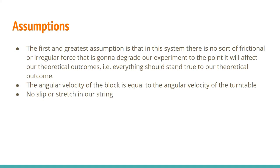In our assumptions portion, the first and greatest assumption is that in this system there is no frictional or irregular force that is going to degrade our experiment to the point that it will affect our theoretical outcomes — everything should stand true to our theory. Our second assumption is that the angular velocity of the block is equal to the angular velocity of the turntable. And our final assumption is that there is no slip or stretch in our string attached to the ball.